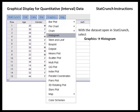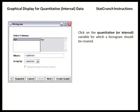With our data set open in StatCrunch, we'll select Graphics, followed by Histogram. In the box that appears, we'll click on the quantitative variable for which we'd like to construct a histogram. You'll notice that gender isn't listed as an option because gender was coded as male or female, and StatCrunch requires some type of numerical response in order to create a histogram.